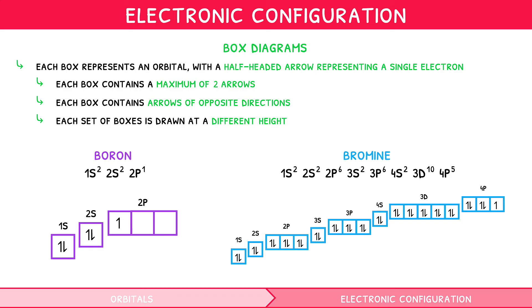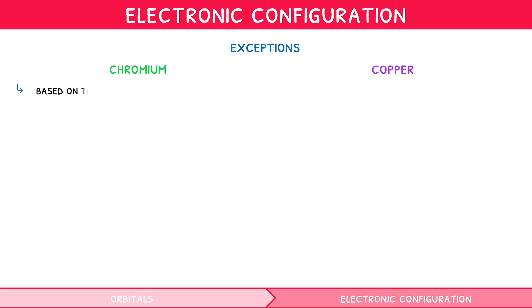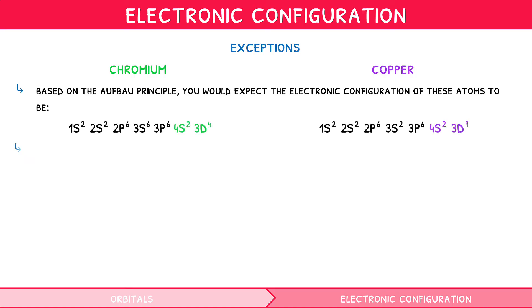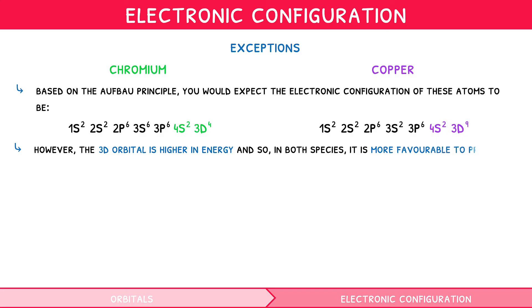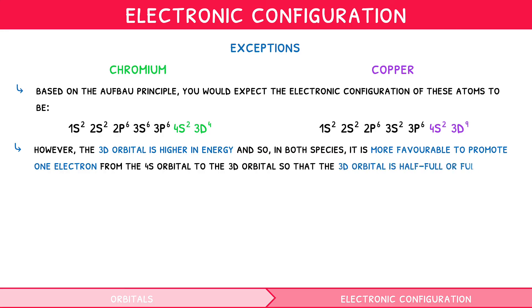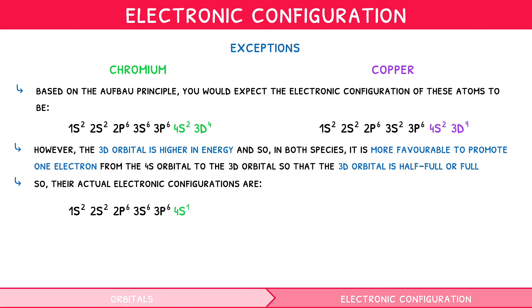You can now understand and draw full electronic configurations, numerically and visually. However, as with most things in the IB syllabus, there are always exceptions. There are two important exceptions you need to know: chromium and copper. Based on the Aufbau principle, you would expect certain configurations, but the 3d orbital is higher in energy. In both species, it is more favourable to promote one electron from the 4s orbital to the 3d orbital so that the 3d orbital is half-full or full respectively. So their actual electronic configurations are: chromium — 4s¹, 3d⁵; and copper — 4s¹, 3d¹⁰. You need to know these electronic configurations by heart.